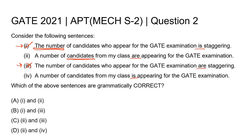So using 'are' is grammatically correct for sentences with 'a number of candidates'. That's why sentence 2 is correct and sentence 4 is incorrect, because sentence 4 uses the verb 'is' for the subject 'candidates', which is plural. Our correct answer is that sentences 1 and 2 are correct, which corresponds to Option A.